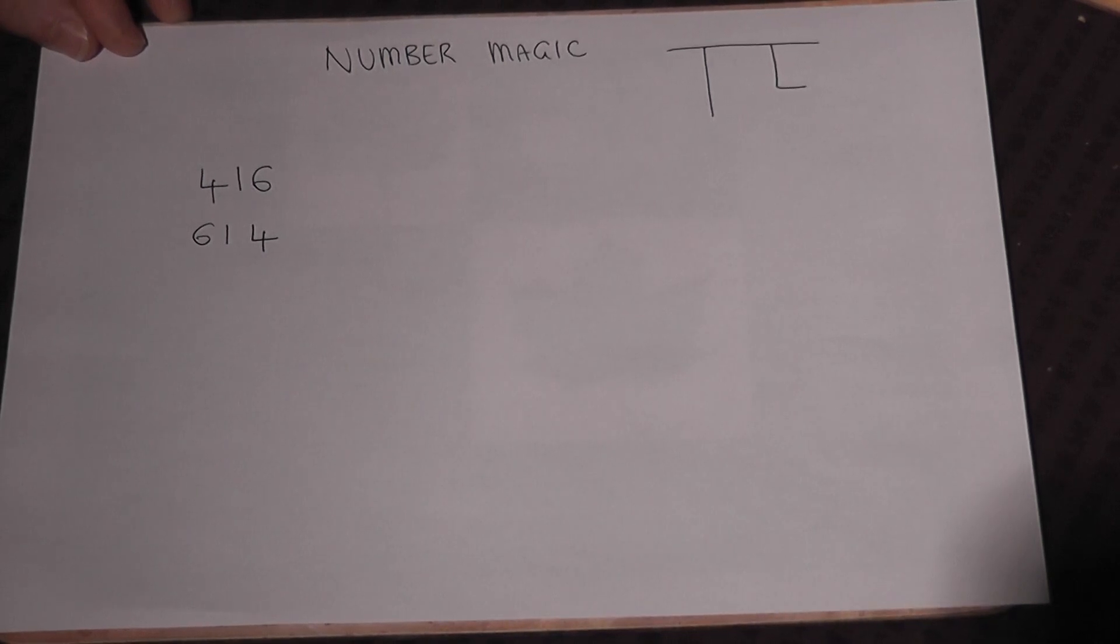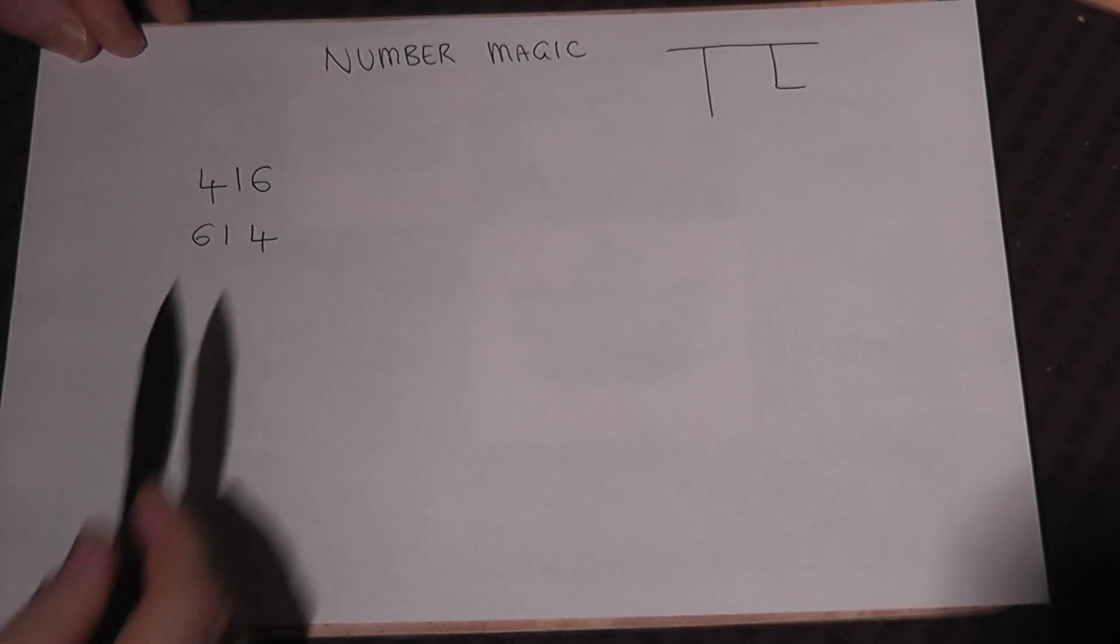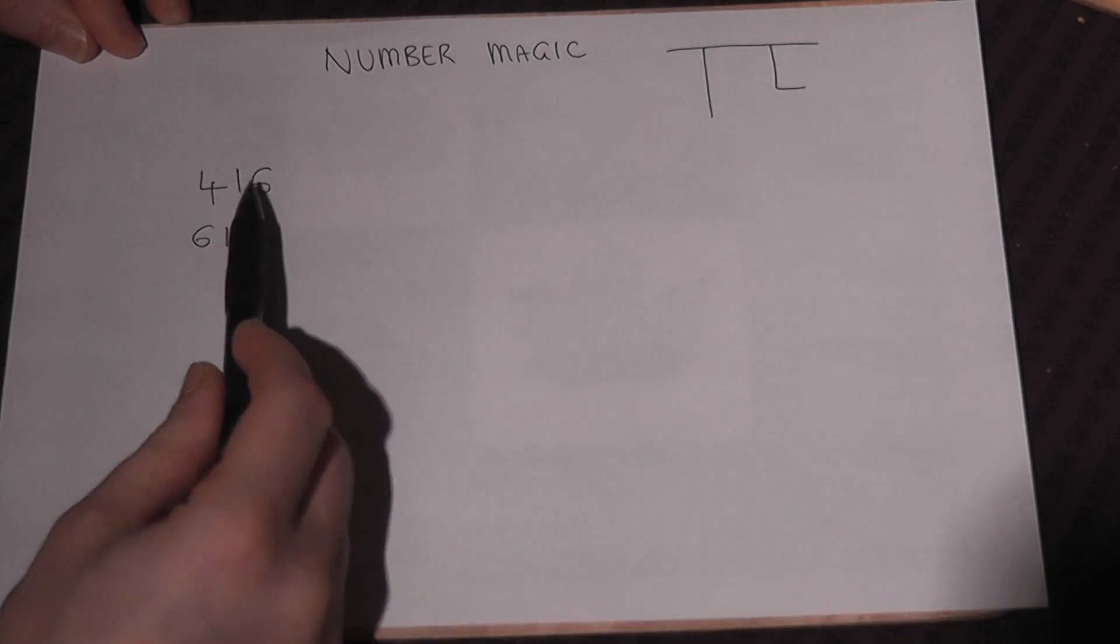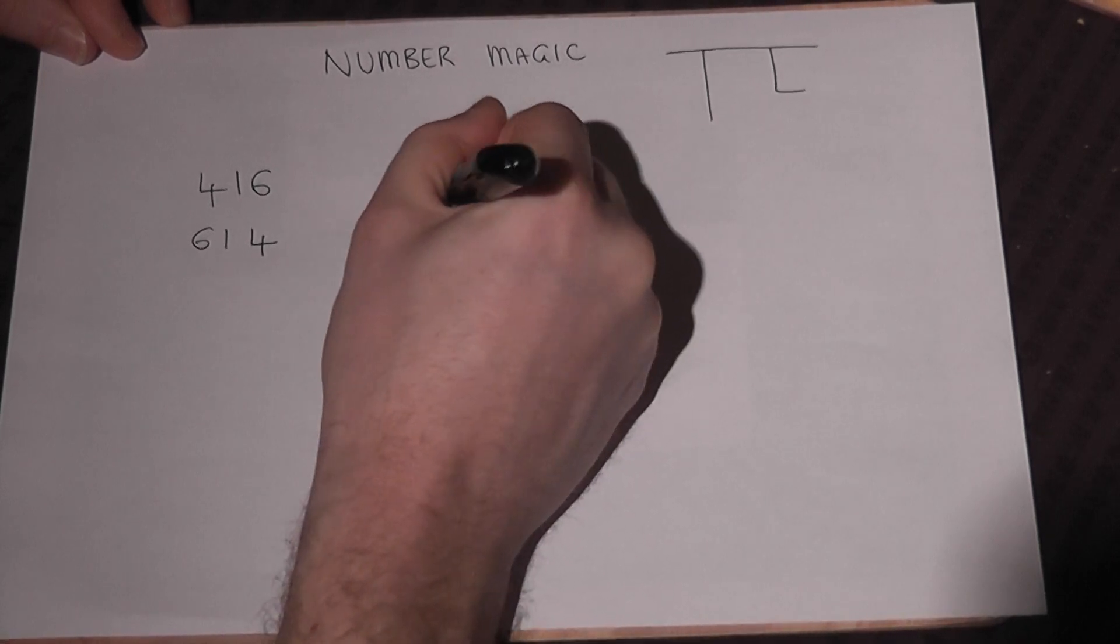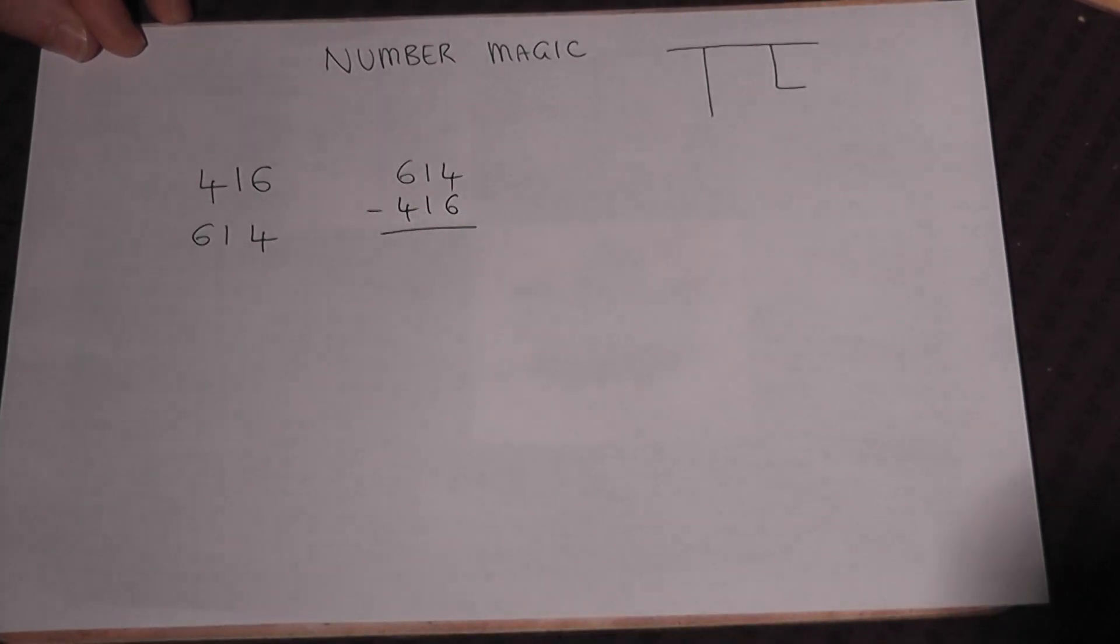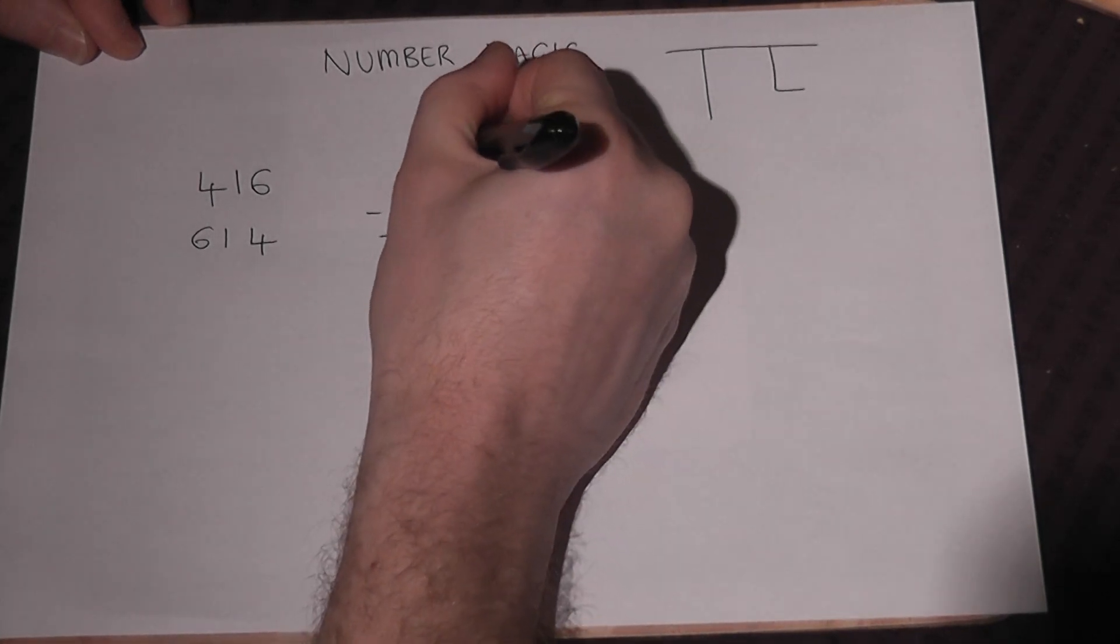Okay, now for this trick you do the smallest number subtracted from the largest. So large take away small and work that out. Here you may find a calculator is useful. I will do it by hand.